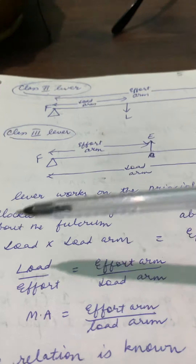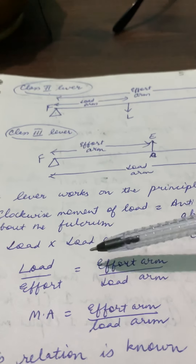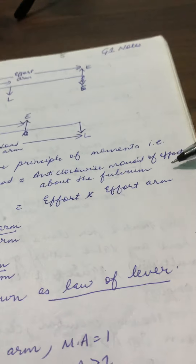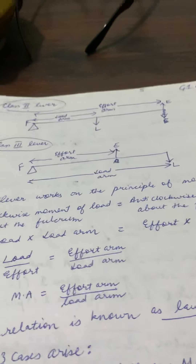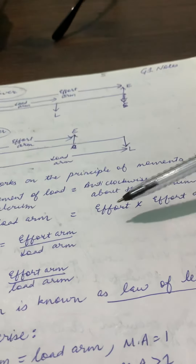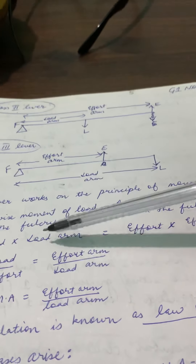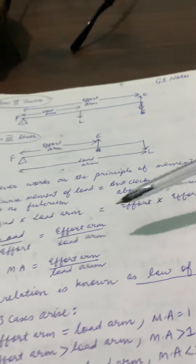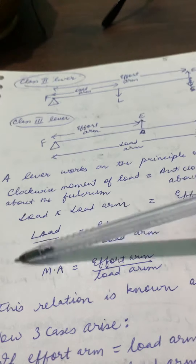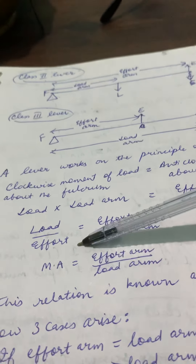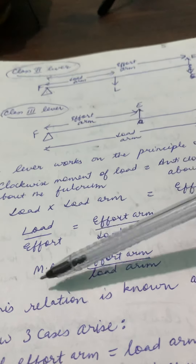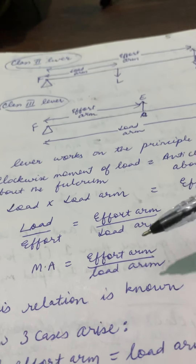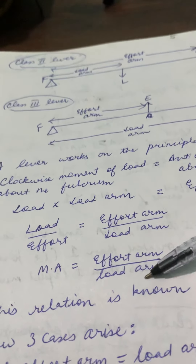The moment of force is force multiplied by perpendicular distance. So for the load: load × load arm = effort × effort arm. Effort gets multiplied on one side and divides on the other, and similarly for load. So we get load divided by effort, which is mechanical advantage. That gives us another formula: mechanical advantage = effort arm divided by load arm.